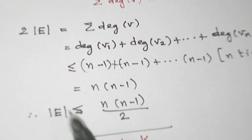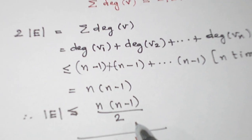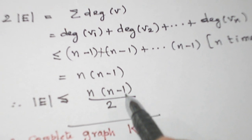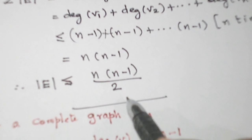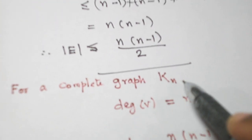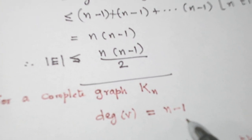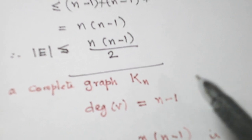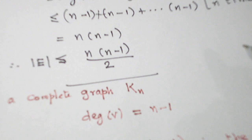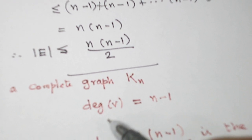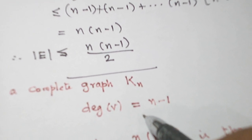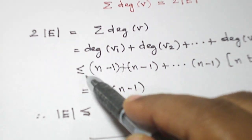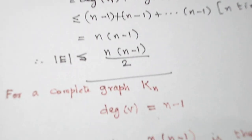So, the number of edges, when I bring this 2 to the right hand side, is a maximum of n(n-1)/2. Just make a note: for a complete graph, the degree of each vertex is exactly n minus 1, since each vertex is adjacent to every remaining vertex. So, instead of inequality, we will have equality here for a complete graph.